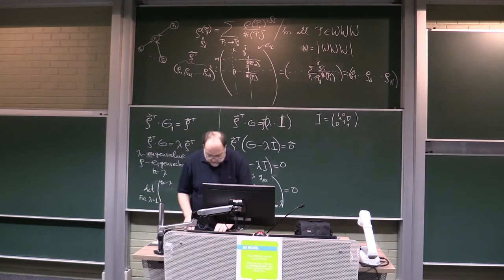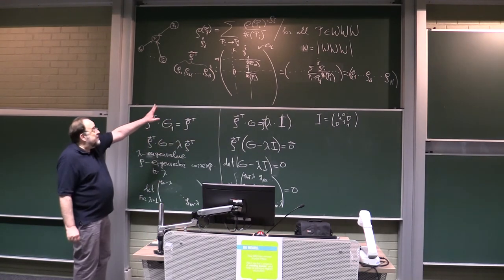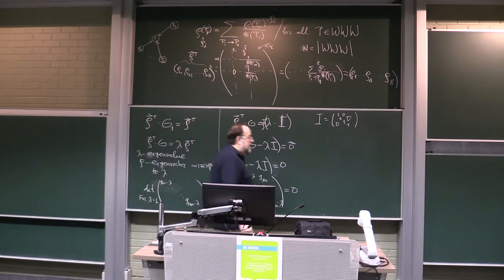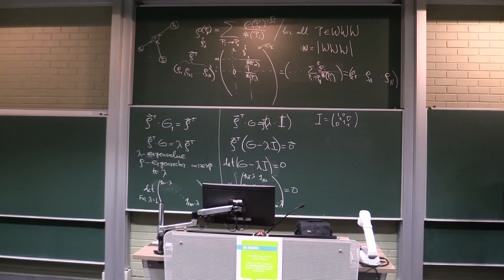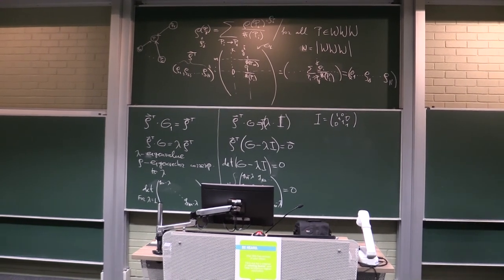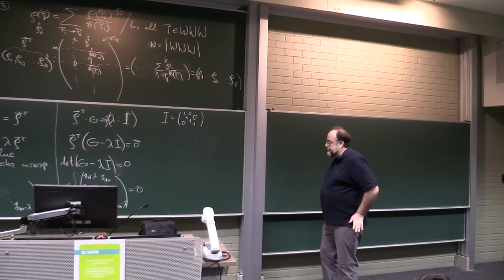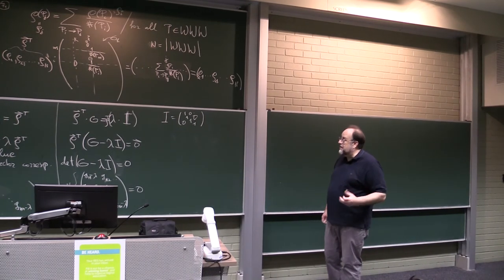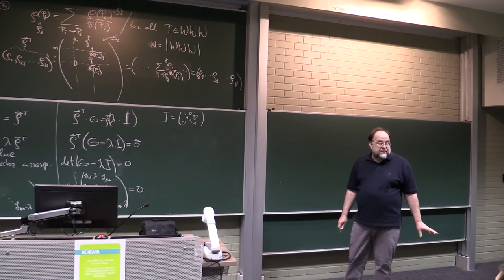So now we want to fix this matrix. As I mentioned last time, interestingly enough, the fix for that is completely intuitive — it is based on the heuristics that Page and Brin had of a random surfer.